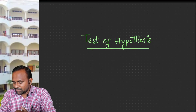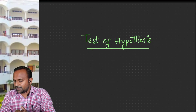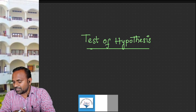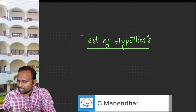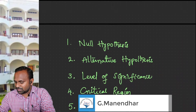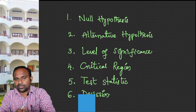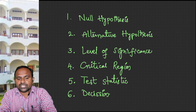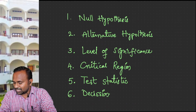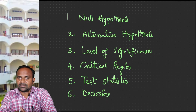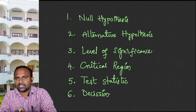Hi everyone. In today's lecture we will learn test of hypothesis. The basic terminology involved in this test of hypothesis will be seen here. The main terminology in this testing process includes null hypothesis, alternative hypothesis, level of significance, critical region, test statistic, and decision making. These are the basic steps which are involved in our testing process.